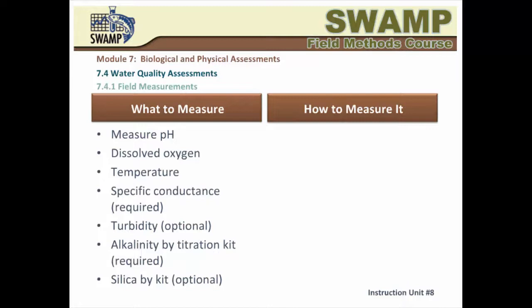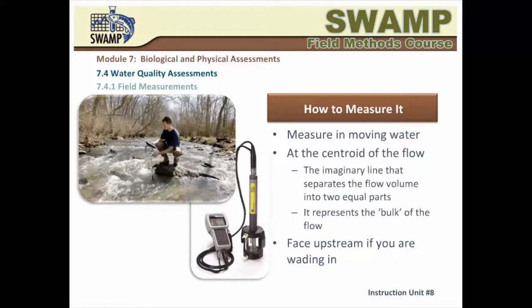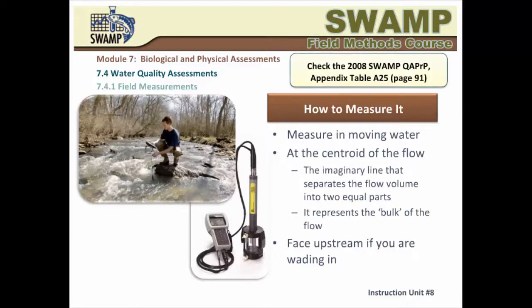SWAMP also calls for measurement of alkalinity and recommends measuring silica as an option. The best place to measure these characteristics is in moving water at a spot that represents the bulk of the flow, such as the centroid — the imaginary line that separates the flow volume into two equal parts. You conduct these field measurements in the centroid facing upstream, at a depth of 10 centimeters below the surface. Please consult the 2008 SWAMP QAPRP, Appendix Table A25, on page 91, for more information.